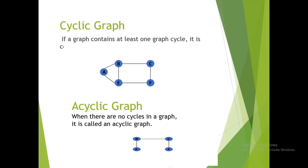Cyclic graph: if a graph contains at least one cycle, it is a cyclic graph. Acyclic graph: when there are no cycles in a graph, it is called an acyclic graph.